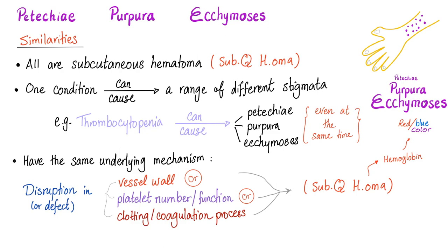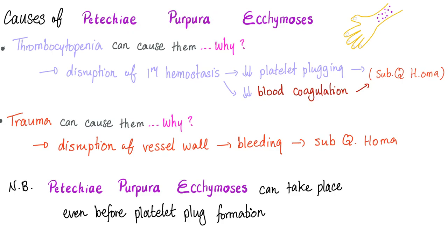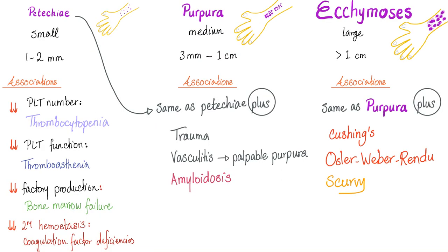Subcutaneous hematoma is a bleeding, and bleeding contains blood, and blood contains hemoglobin. Hemoglobin gives you the red, blue, or purple color you see in petechiae, purpura, and ecchymosis. Common causes include thrombocytopenia — disruption in primary hemostasis — and trauma, which is disruption of the vessel wall. Petechiae are small (1–2 mm), purpura medium (3 mm to 1 cm), and ecchymosis large (more than 1 cm). Associations include thrombocytopenia, thrombasthenia, bone marrow failure, and coagulation factor defects — primary and secondary hemostasis.